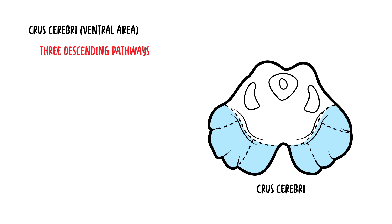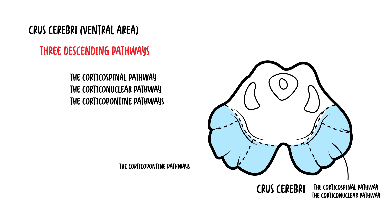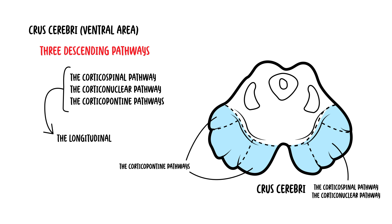These pathways include the corticospinal pathway, the corticonuclear pathway, and the corticopontine pathways. Collectively, these are called the longitudinal pontine fibers.